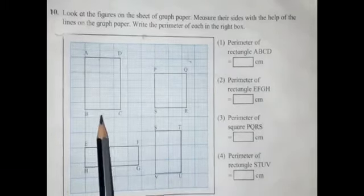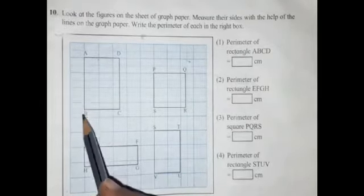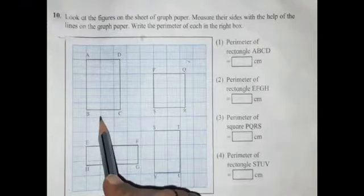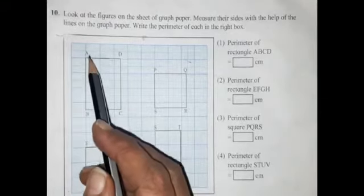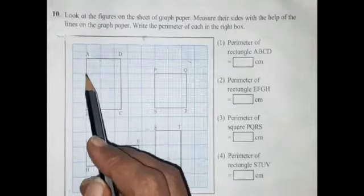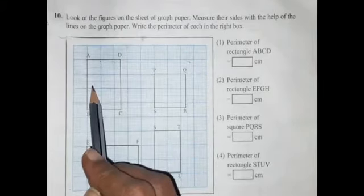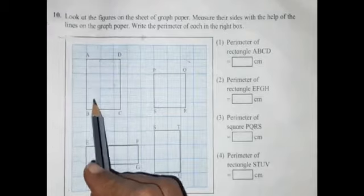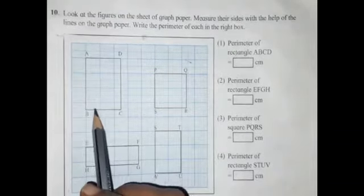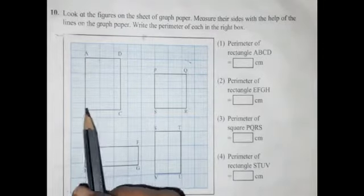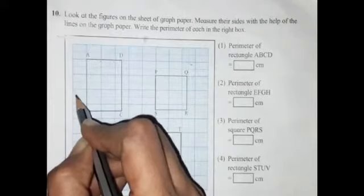Now see this figure of rectangle. Here AB is the length of the rectangle and BC is the breadth. Now count the length: 1 centimeter for each square — 1, 2, 3 centimeters and this one is half. So 3.5 centimeter is the length of the rectangle.